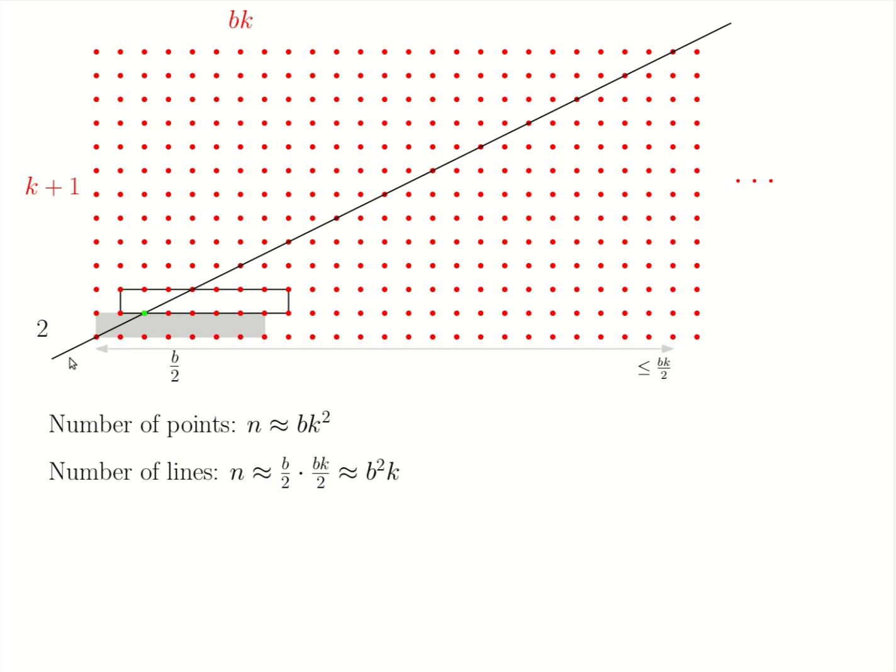As we discussed, each such line will pass through k points on its way out. And thus, the number of incidences, a factor k bigger than the number of lines.